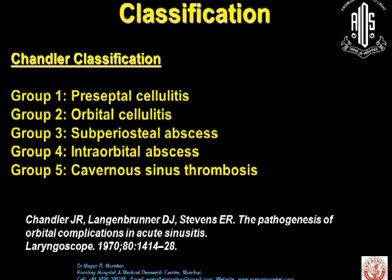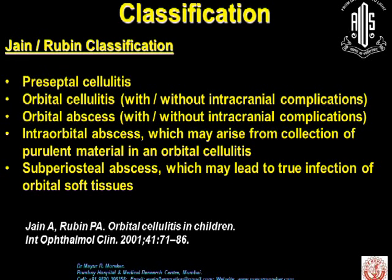Beyond Chandler's classification, which classifies orbital complications of sinusitis, you can basically see preseptal cellulitis, orbital cellulitis, subperiosteal cellulitis, intraorbital cellulitis, and cavernous sinus thrombosis. These represent what sinusoidal cellulitis can cause in terms of orbital inflammation. There is also the modified Chandler classification, which classifies orbital cellulitis as preseptal cellulitis, orbital cellulitis with or without intracranial complications, orbital abscess with or without intracranial complications, intraorbital abscesses, and subperiosteal abscesses which may lead to true infection of the orbital tissues.